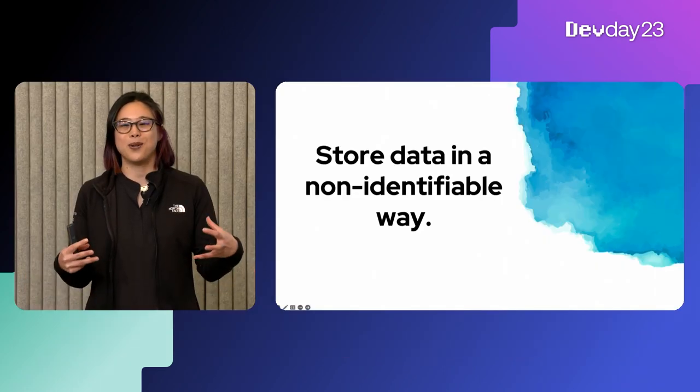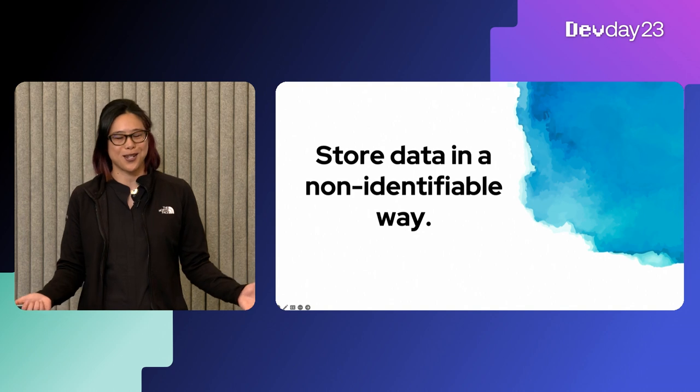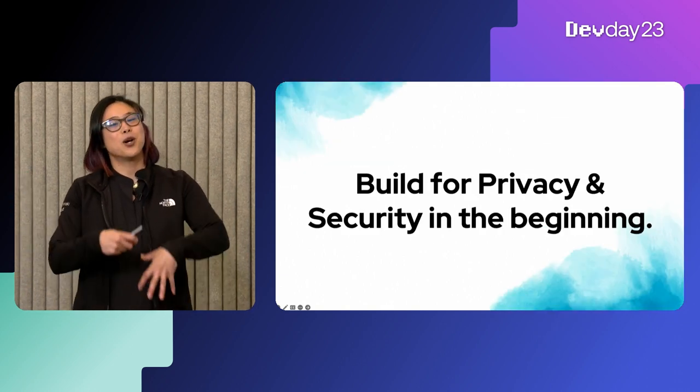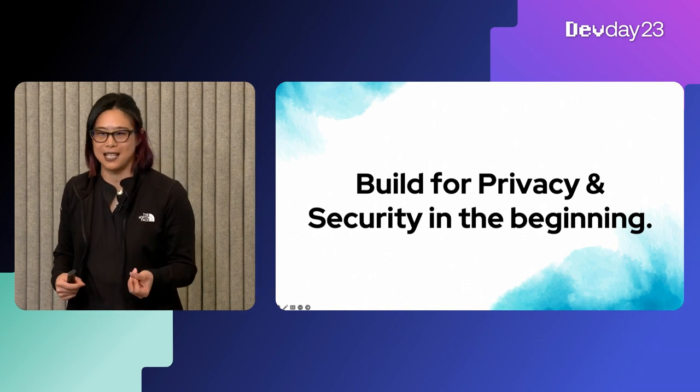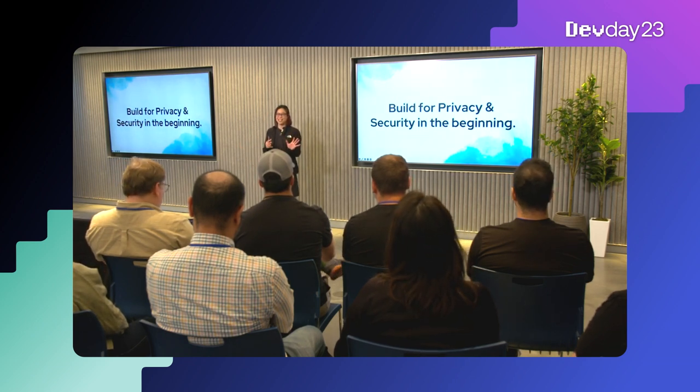Number four: store your data in a non-identifiable way if you must store it. Can you break up the data set and store it in multiple systems? Or can you restrict access so that only the people who need it to get their job done have access — that's called the principle of least privilege. Also, encrypt all of that data at rest and in transit. Number five: build for privacy and security from the beginning. It's never cheaper, faster, or less effort to bolt it on later. If you bolt it on later, you may have to materially change what you built or retire it due to privacy law violations. Build to the strictest standard — for most of us, that's GDPR. Use that as your guide.